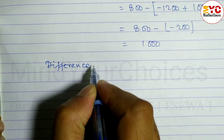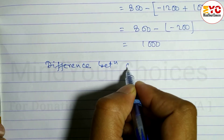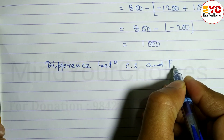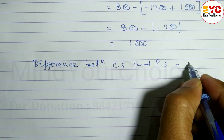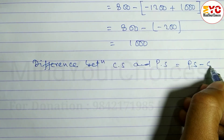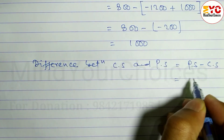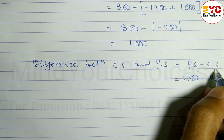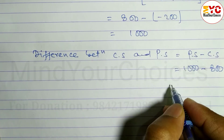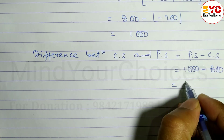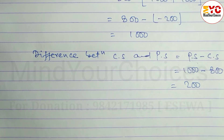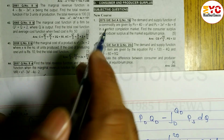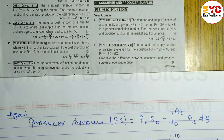The difference between consumer surplus and producer surplus is: PS - CS = 1000 - 800 = 200. Hope you understand this question taken from consumer and producer surplus.